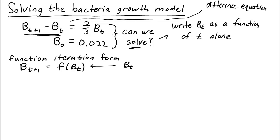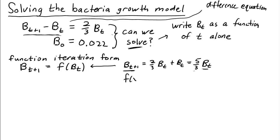We do that by adding b_t to both sides of the equation. We get that b_{t+1} is two-thirds b_t plus b_t — the one we added to both sides. In other words, it's five-thirds b_t. So to go from the bacteria population at time t to time t+1, we simply need to multiply by five-thirds, or 1 plus the two-thirds we were given. This function f is just multiplication by five-thirds.